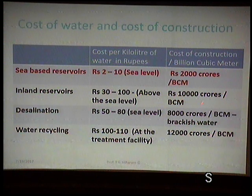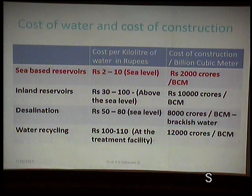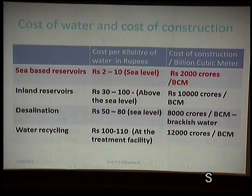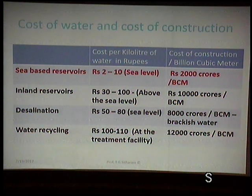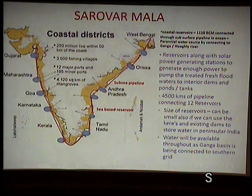The Palavaram dam cost was estimated by the speaker. Desalination costs 50 to 80 rupees, but Chennai's desalination plant is giving almost 80 rupees — and they pay in dollars, so costs fluctuate with exchange rates, at around 8,000 crores. Water recycling from effluent treatment plants costs around 100 rupees — the highest — at about 12,000 crores per billion cubic meters. All of this shows that a sea-based reservoir is going to be the cheapest both in terms of water cost and construction.